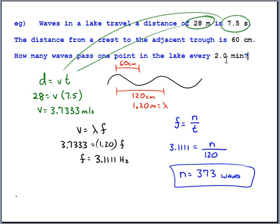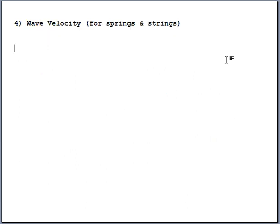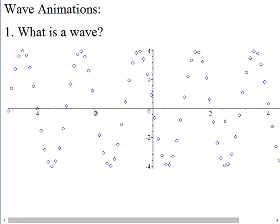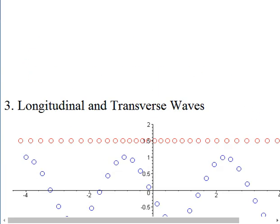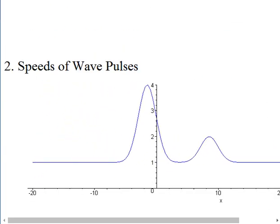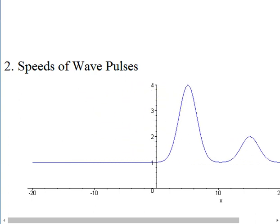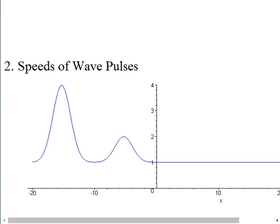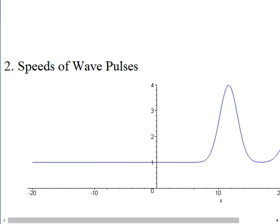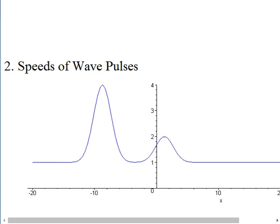Let's talk about wave velocity in a slinky. If you send a small wave pulse followed by a large one down a slinky, even though the large one has a much bigger amplitude, both pulses travel at the same speed. The wave speed does not depend on the size of the wiggle. It depends on how tightly the slinky is tensioned and how massive it is — not on the amplitude.